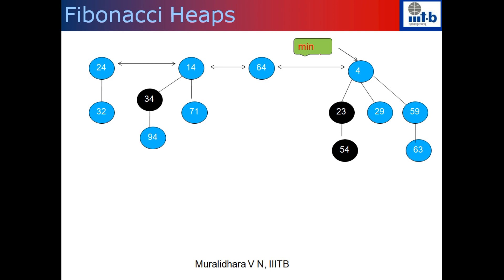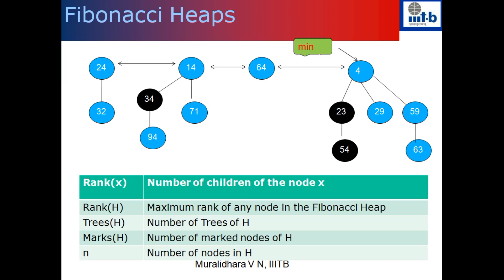A few more definitions on Fibonacci heaps. The rank of a node x is defined as the number of children of that node. For example, if you take node 64, it has no children, so rank of 64 is 0. Rank of 14 is 2 because it has exactly 2 children. Rank of 4 is 3 because it has 3 children. The rank of the heap h is defined as the maximum rank of any node in the Fibonacci heap. In this example, the node with the maximum rank is node 4 with 3 children, so the rank of the heap is 3.